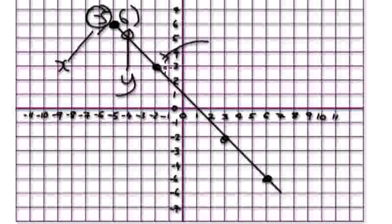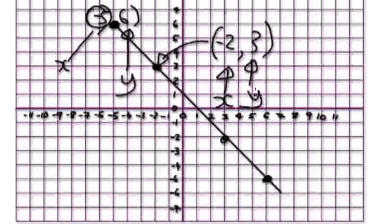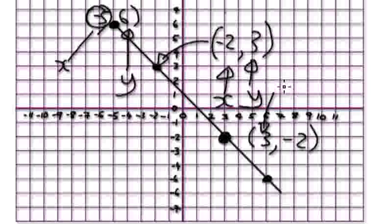Let's have a look at this point here. This point here would be minus 2, 3, because it's 3 up. Again, this is your x value and this is your y value. And then if you look at this point here, the coordinates would be 3, minus 2. So this is your x, and this is your y.